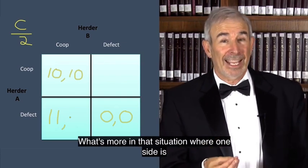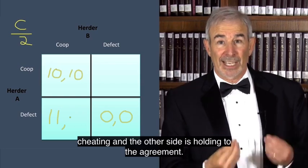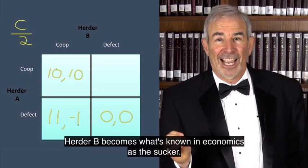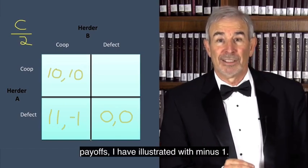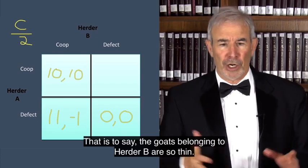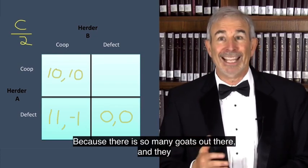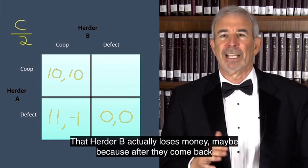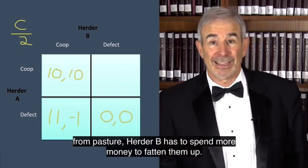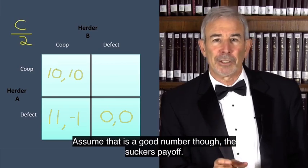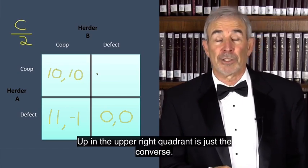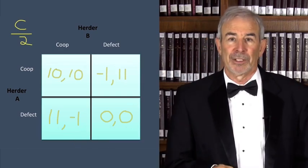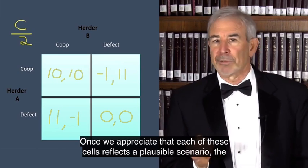What's more, in that situation where one side is cheating and the other side is holding to the agreement, herder B becomes what's known in economics as the sucker. And the sucker payoffs, I have illustrated with minus one. That is to say, the goats belonging to herder B are so thin because there's so many goats out there. And they don't make it, he doesn't make it up in numbers, that herder B actually loses money. Maybe because after they come back from pasture, herder B has to spend more money to fatten them up. Assume that's a good number though. The sucker's payoff. Up in the upper right quadrant is just the converse. What happens if herder A cooperates, the sucker, but herder B defects? And I made the payoffs accordingly.